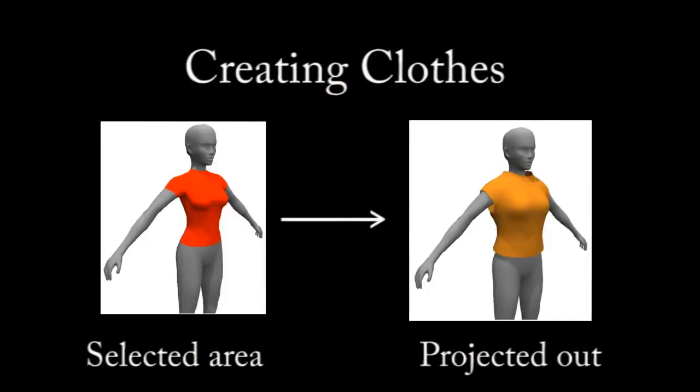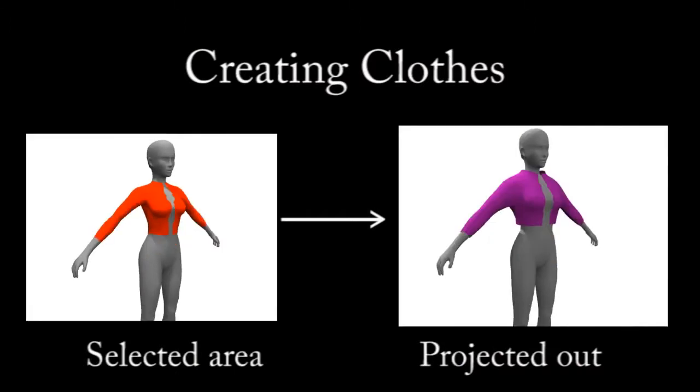We can easily design clothing by specifying the area on the body that we want to cover and tracking the equipotential of a threshold value.